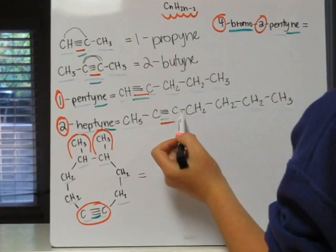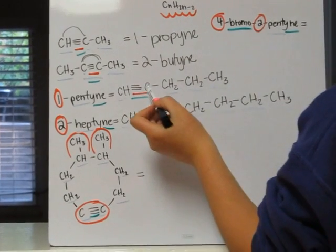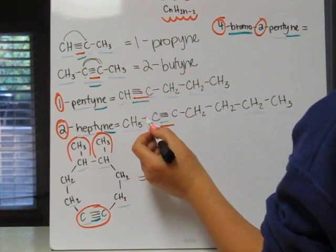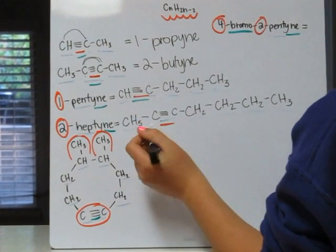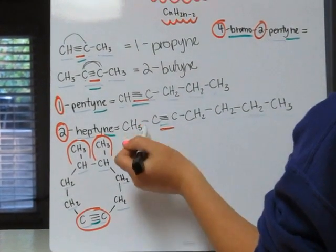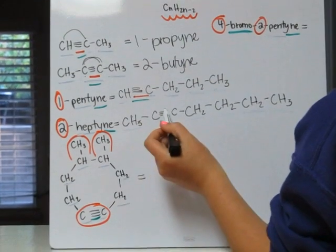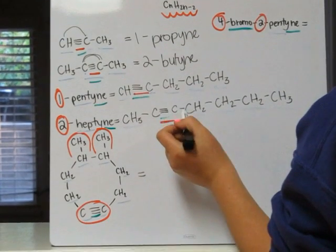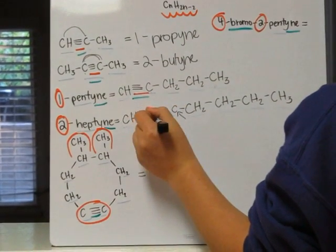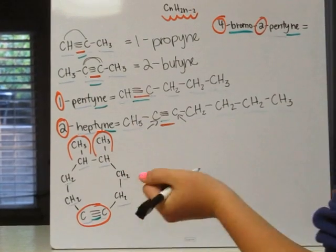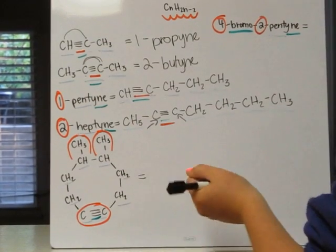These two carbons are the same case as the one above. We have four bonds on each, so they need no hydrogen. So this one and this one are saturated, meaning they don't need a hydrogen.